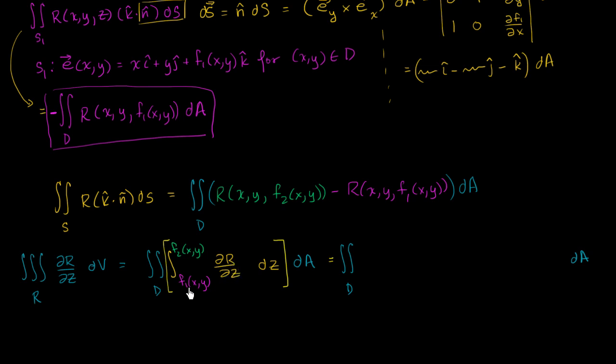z evaluated when z is f2, and from that we subtract when z is f1. So this is r of x, y, z evaluated when z equals that, minus when z equals that.